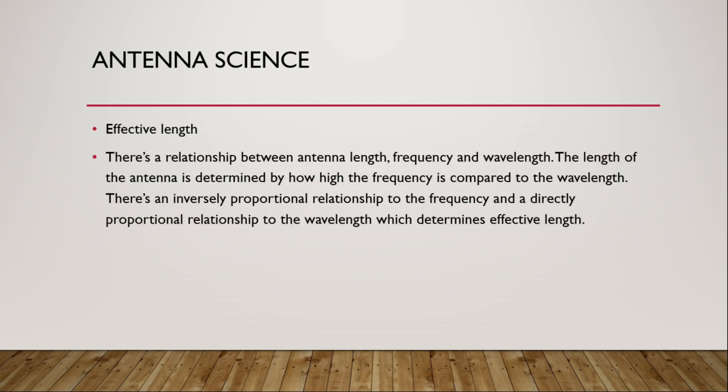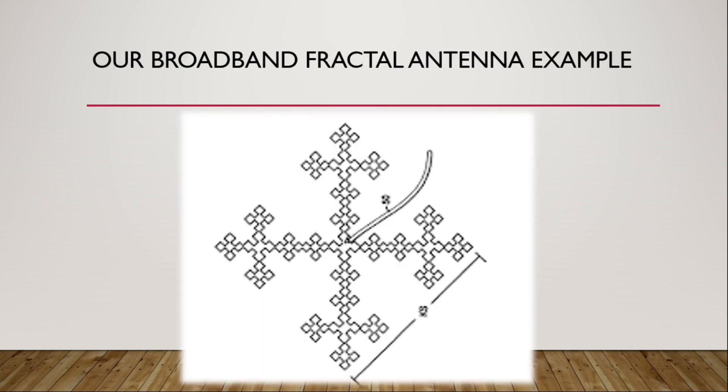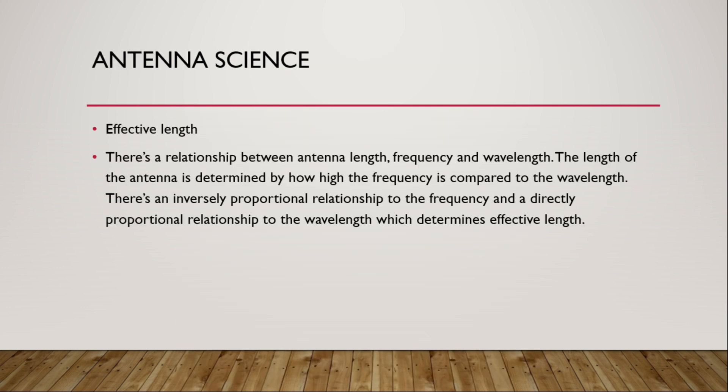Antenna science. This comes down to effective length. So there is a direct relationship between antenna length, frequency, and wavelength. The length of the antenna is determined by how high the frequency is compared to the wavelength. There is an inversely proportional relationship to the frequency and a directly proportional relationship to the wavelength, which determines effective length.